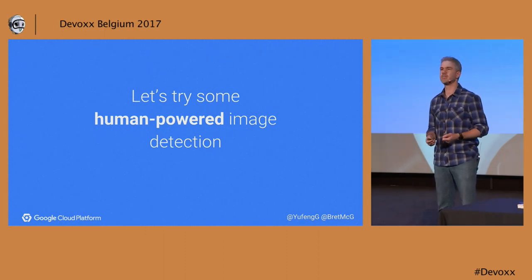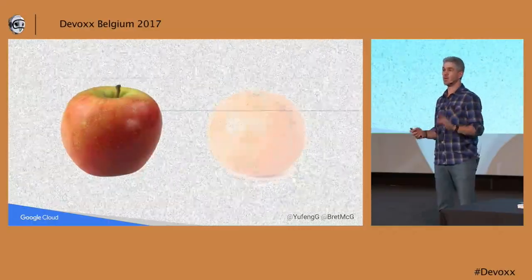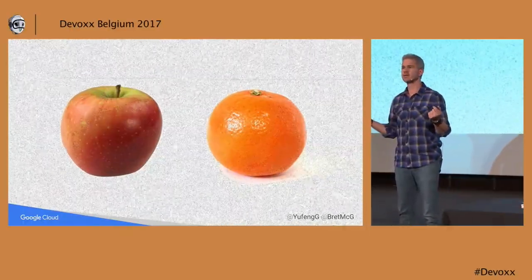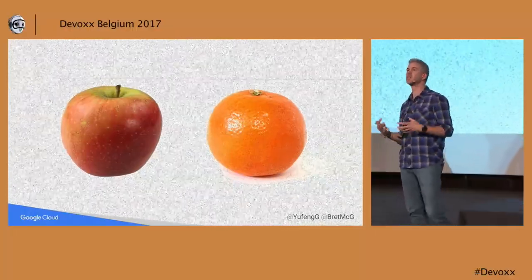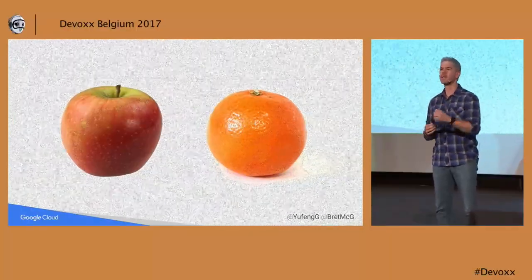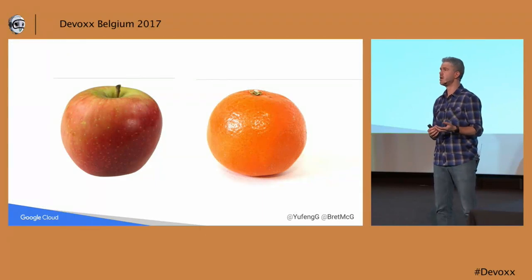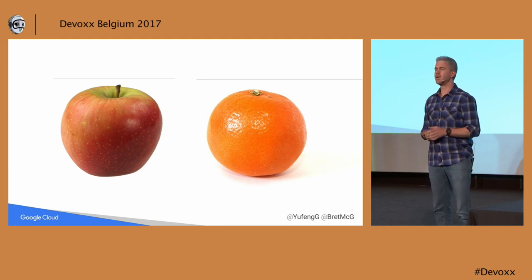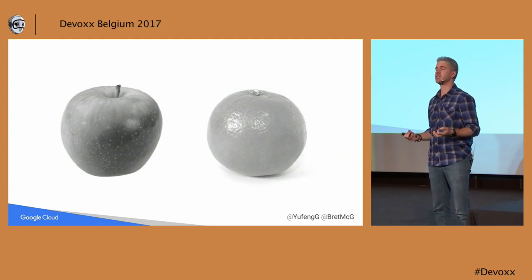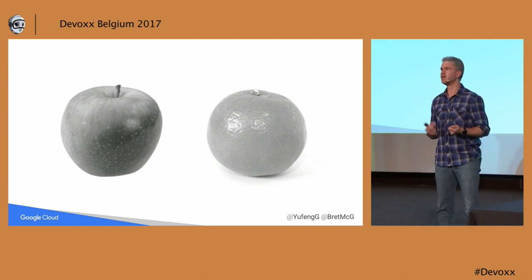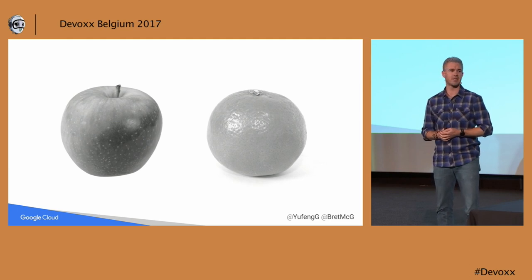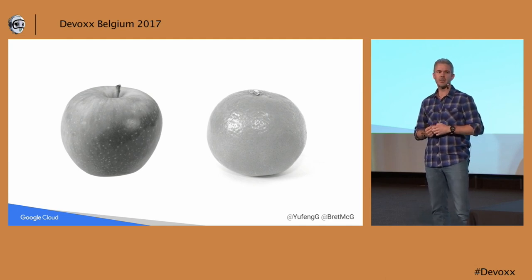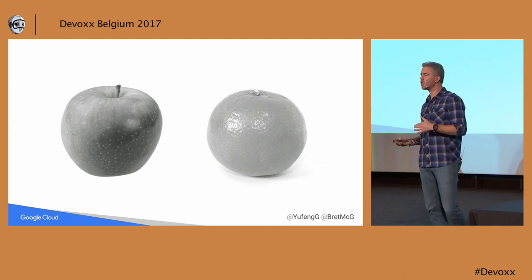By way of illustration, let's try how we might program a traditional system to do image detection. Say we're building a system to tell the difference between an apple and an orange. What are some things we can look for in these two images to tell them apart? Color — so maybe we count all the pixels, count the red ones and the orange ones, and if there's more red than orange, it's probably an apple. But we'll run into a problem because what if we're given images where that doesn't work? We might fall back to another rule, like shape. So maybe we'll do something like texture — if it's bumpy, then maybe it's an orange; if it's smooth, it's an apple.